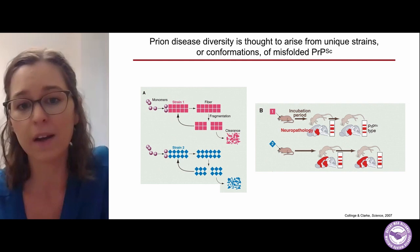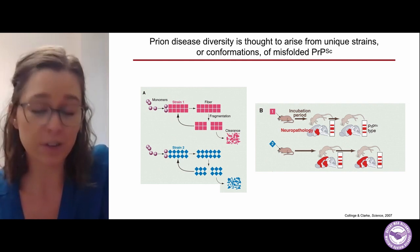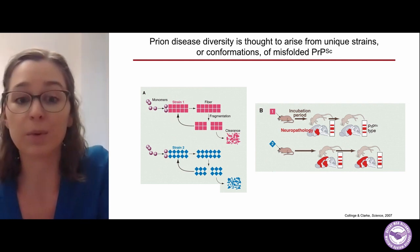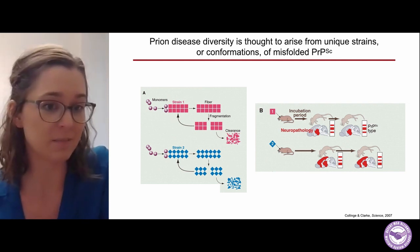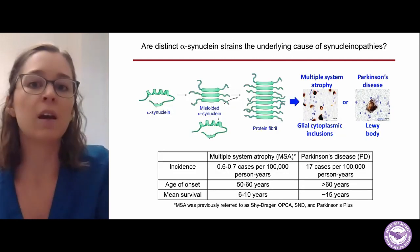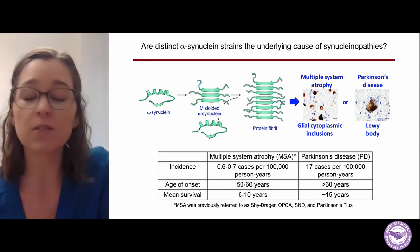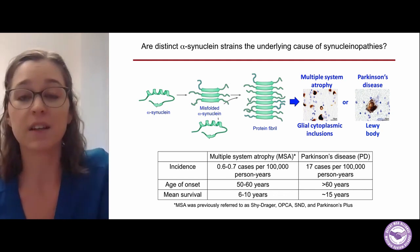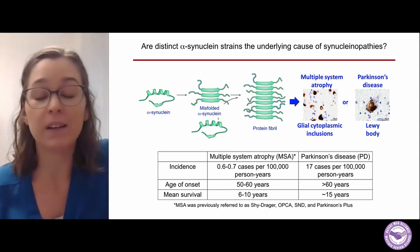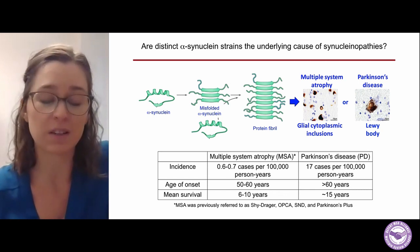That strain also produces a unique biochemical signature when we do other tests in the laboratory to look at how the protein degrades. Whereas strain two, represented by the blue diamonds, has a different neuropathology and a different biochemical signature in the laboratory diagnostics. So a big question recently in the field is: are distinct alpha-synuclein strains the underlying cause of synucleinopathies? In the Warman Lab, we think that yes, this is the underlying cause of the unique diseases.